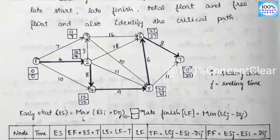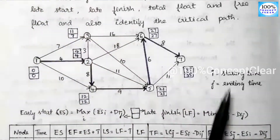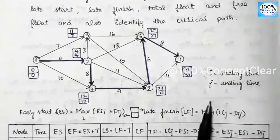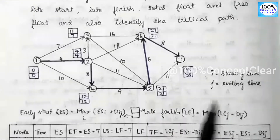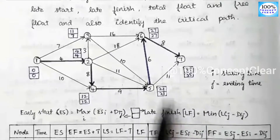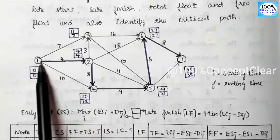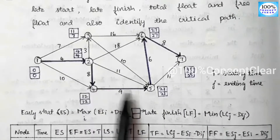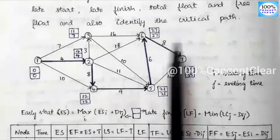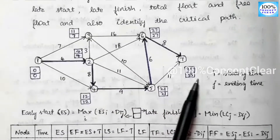We will explain this with an example already solved in the playlist — there is a link in the description below. In our example, the critical path is: 1→2, 2→4, 4→5, 5→6, 6→7. All remaining activities are non-critical activities.